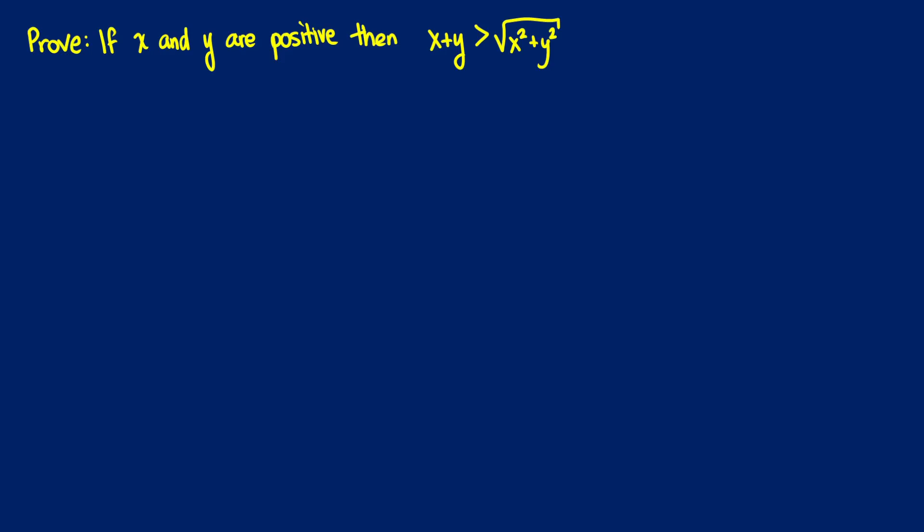I want to show this proof because it's a little bit different than some of the other ones we do. So we want to prove that if x and y are positive, then x plus y is greater than the square root of x squared plus y squared.